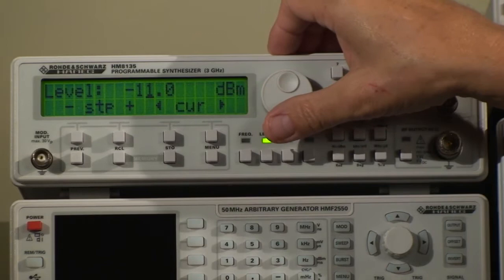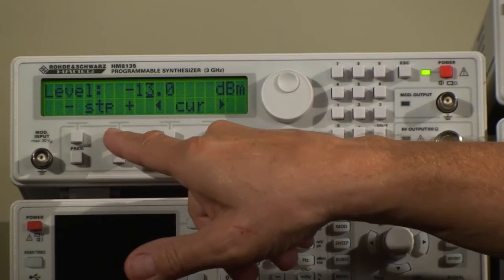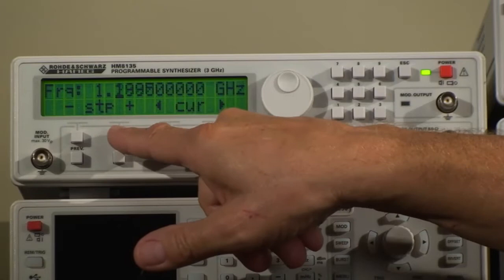If you want to set the level, now it's at minus seven, that's the default. I can just go down to minus 11, or I can use the step, which is set to half a dB. Or in frequency again, I can use the step, which is set to five kilohertz in this case.